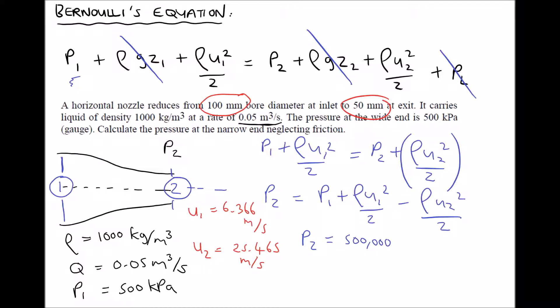We have a density of 1000 and a velocity 1 of 6.366. From that, we need to subtract the density times velocity 2 squared, 25.465 divided by 2, giving us a pressure at position 2 equal to 196,030. So that's 196.0 kilopascals.